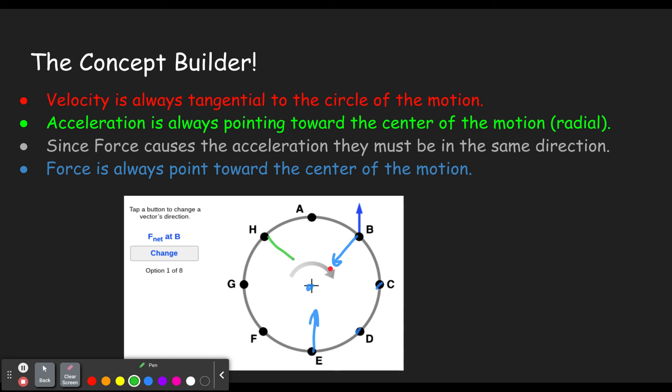So whichever of these points you're at, make sure the force points towards the center. Likewise, the acceleration would point towards the center. If you were asked about acceleration, click the button until the acceleration points towards the center. And if you're ever asked about velocity, notice carefully the direction it's going, which I believe it always goes clockwise. At least for me, when I ran through it just now, it was always clockwise. So that means if we were at point C here, we'd be moving along the tangent such that it's clockwise. If we're at F over here, we'd be moving along the tangent as though it were clockwise.